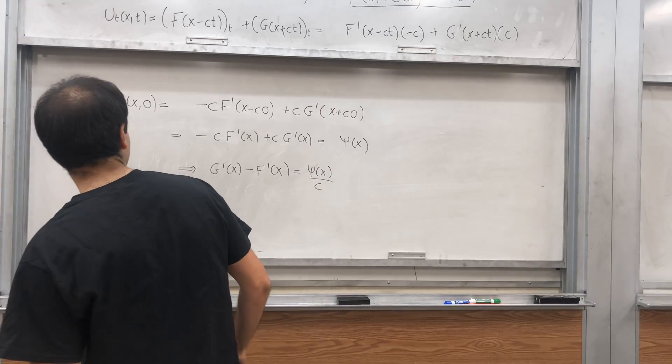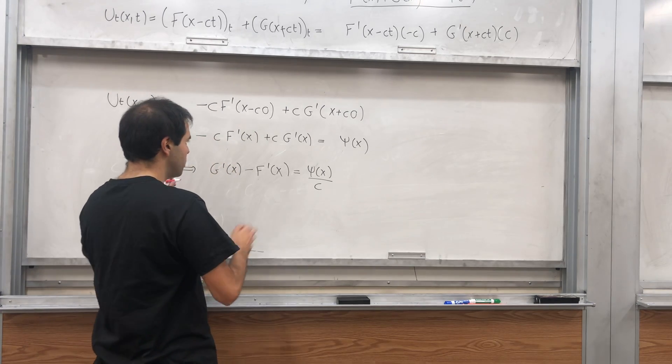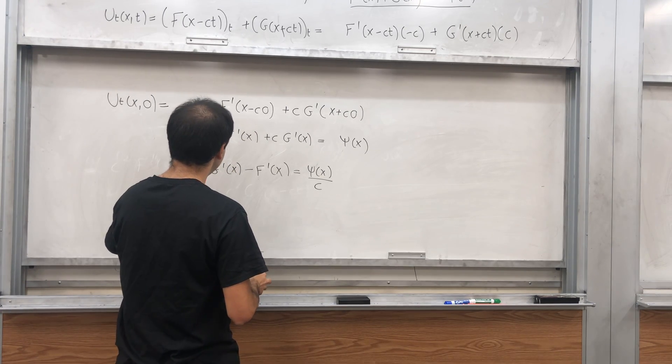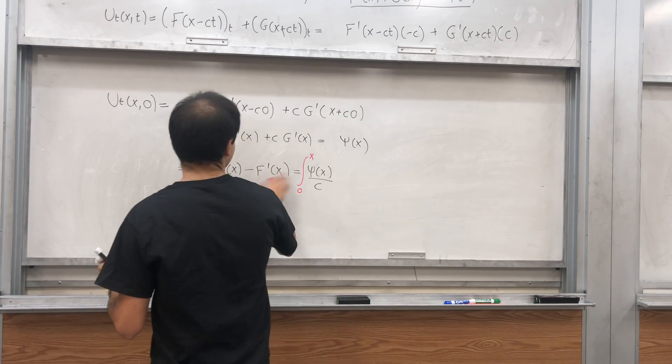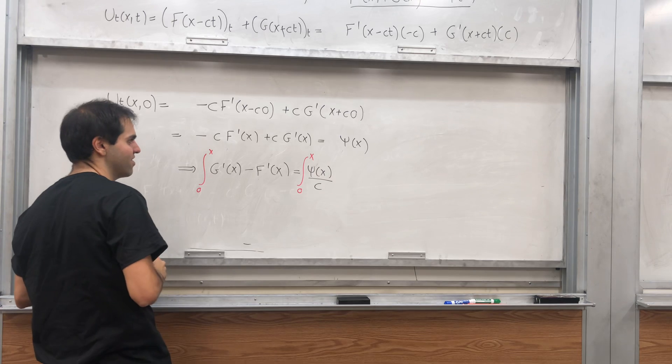Well, to get F and G back, let's just integrate. So what we could do, for instance, is to take this equation and essentially integrate from zero to x.